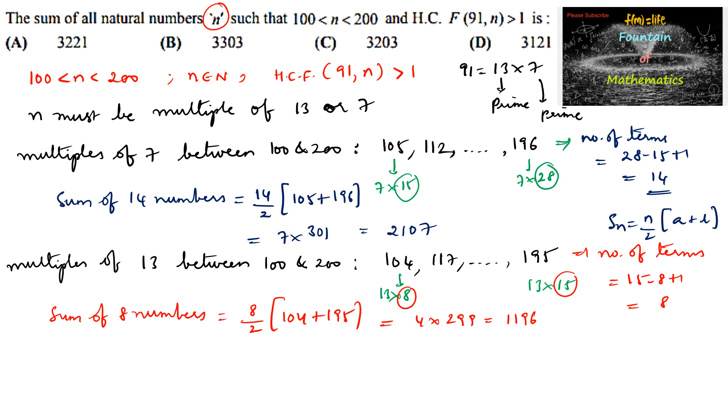And now we may consider the multiples of 13 and 7, which is 91, because 91 multiples are common in both. Multiples of 91 are 91, 182, and 273. There is only one number which is between 100 and 200, which is 182. This is included in both multiples of 7 and multiples of 13, so we need to subtract it.